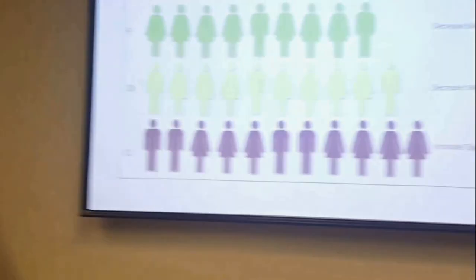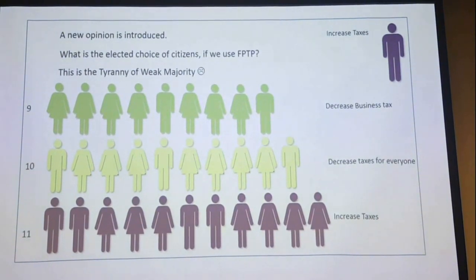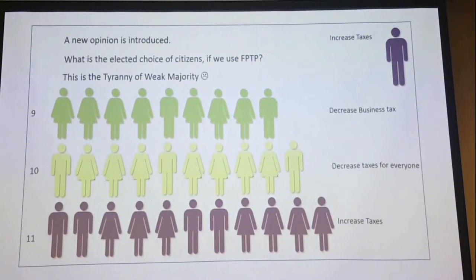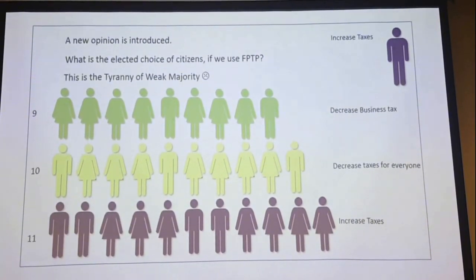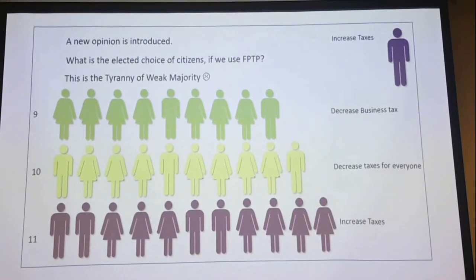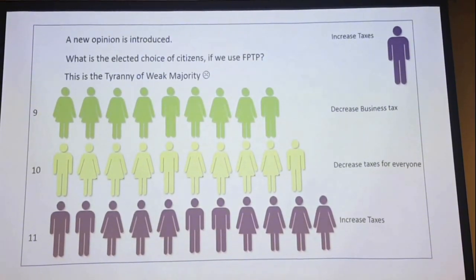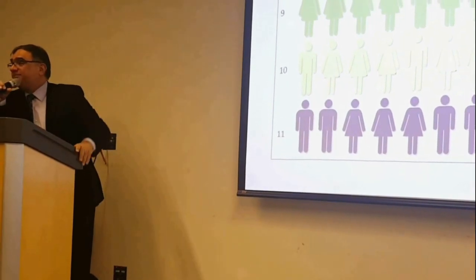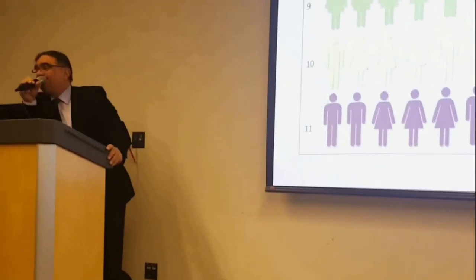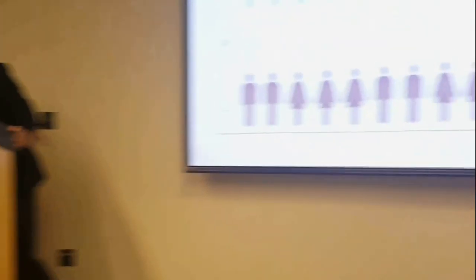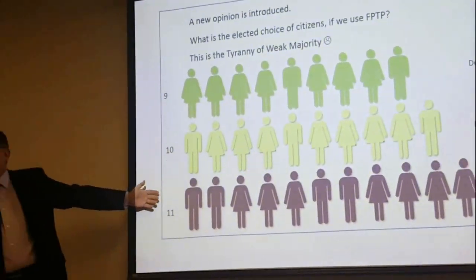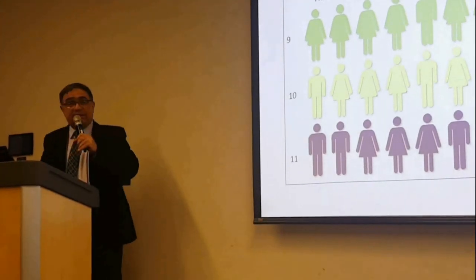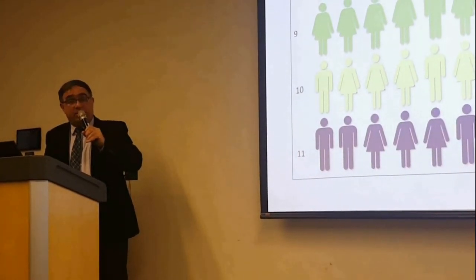Now someone comes and says we have to decrease tax for businesses, because government needs money. And then there are people who say we have to decrease tax for everyone. The people who want to decrease taxes are still the majority, but they have this difference of opinion: should we decrease taxes for everyone or only for companies? Under first-past-the-post, the result would be: increased taxes wins — which is not maximizing the utility of most people.